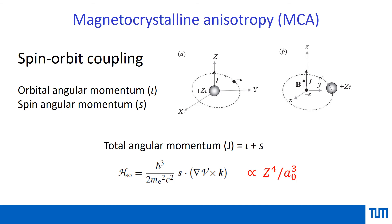If we look at the magnitude of spin-orbit coupling and how it scales across different materials, spin-orbit coupling is proportional to Z to the power of 4, where Z is the atomic number. This means we expect spin-orbit coupling to play a stronger role in heavier elements as we go down the periodic table, and it will be weaker for elements with low atomic number, particularly for inner-shell electrons. For example, platinum is a heavy metal expected to have strong spin-orbit coupling.